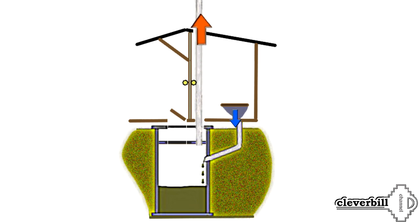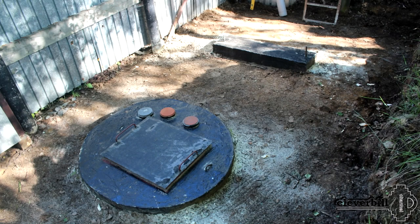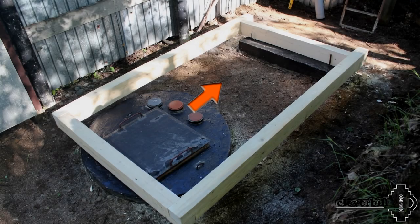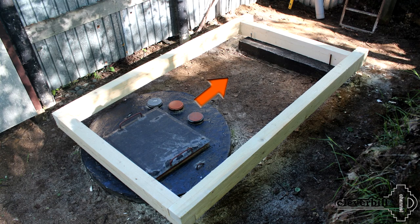The septic tank is made of concrete rings, where the lower ring has a concrete bottom. The toilet room is installed on one side directly on the septic, and on the other side on a concrete slab. From a wooden bar, the lower binding of the toilet room is made.